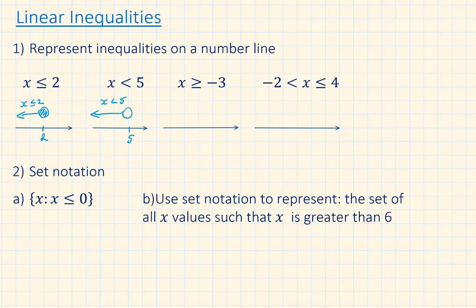x is larger than or equal to minus 3. We label minus 3. Minus 3 is included, and now we have an arrow pointing towards positive infinity.